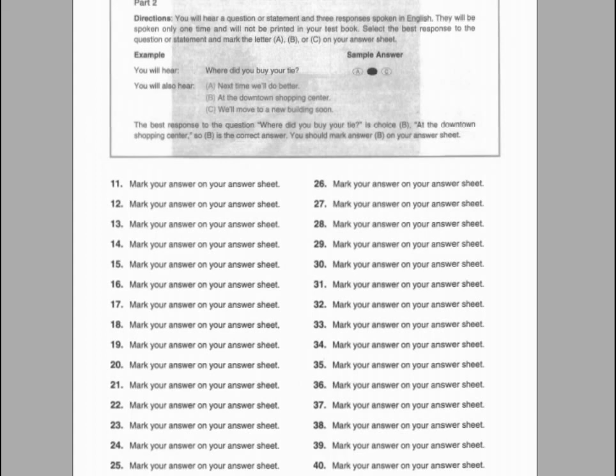For example, you will hear: 'Where did you buy your tie?' You will also hear: A. Next time we'll do better. B. At the downtown shopping center. C. We'll move to a new building soon. B is the best response to the question 'Where did you buy your tie?' — 'At the downtown shopping center.' So B is the correct answer. You should mark answer B on your answer sheet.